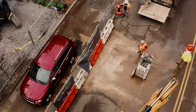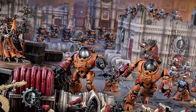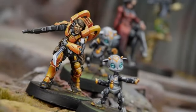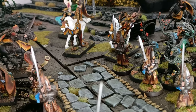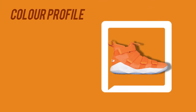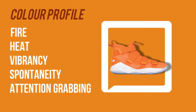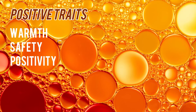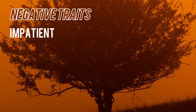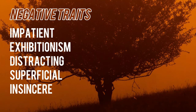Fighting forces with a predominantly orange theme: Trans-Hyperion Alliance, Adeptus Mechanicus Ryza, Qianggao, and Rolling Thunder Company. Color associations: fire, heat, vibrancy, spontaneity, and attention-grabbing. Positive traits: warmth, safety, positivity, youth, and sociability. Negative traits: impatient, exhibitionism, distracting, superficial, and insincere.